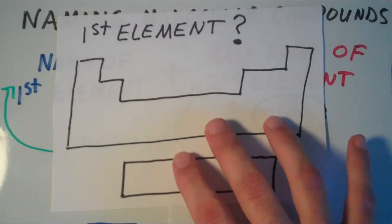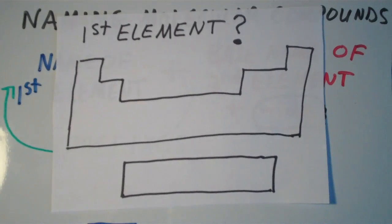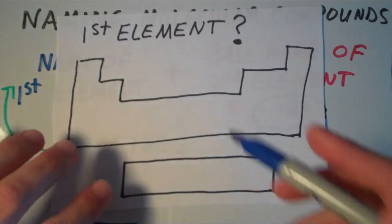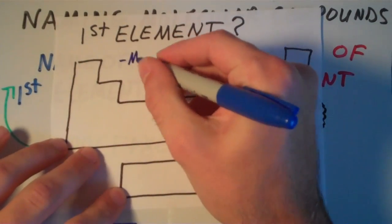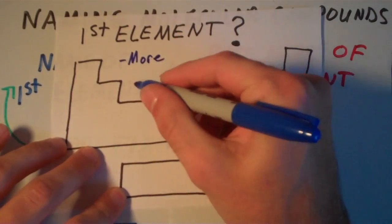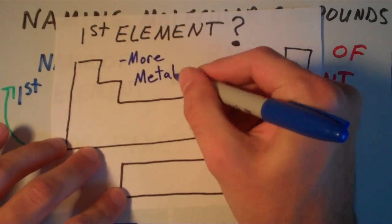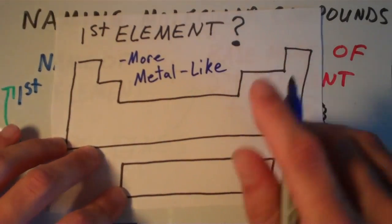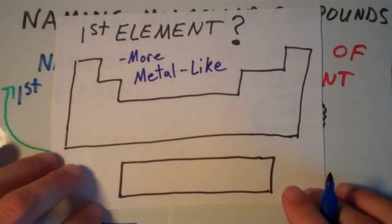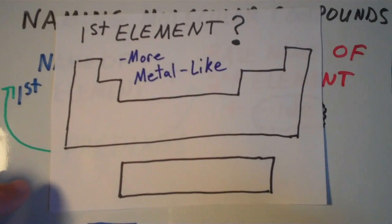Imagine that this is just a rough diagram of a periodic table. The first element that you want to name when you name molecular compounds is the one that is more metal-like. So the more metal-like element is the one that you're going to name first.